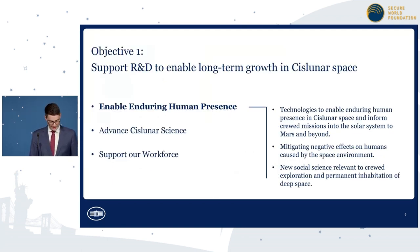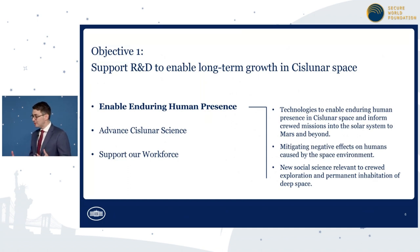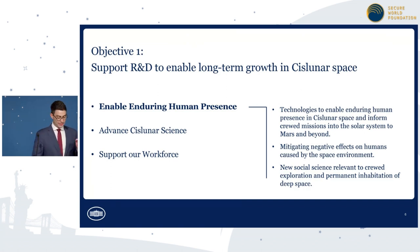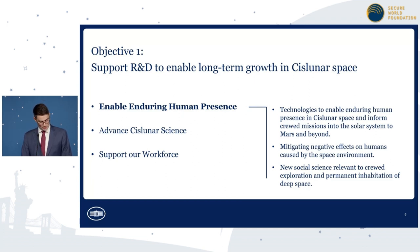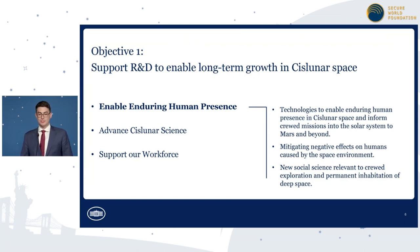The first objective is research and development to enable future growth in this region of space. This includes technologies to mitigate the negative effects of the space environment on humans — especially important as humans expand beyond the Van Allen belts. But it also includes social science. The cislunar strategy notes that the United States government will support social science related to crewed exploration and permanent inhabitation of deep space. Many unresolved issues regarding space exploration cannot be solved through engineering alone, such as the guiding ethics of expansion into space, long-term cooperative models for space development, and equitable governance structures for space communities. The strategy continues: the United States will enable and support research in the social sciences to advance our understanding of these issues, encouraging the scientific community and the wider public to think more deeply about humanity's long-term future in space.